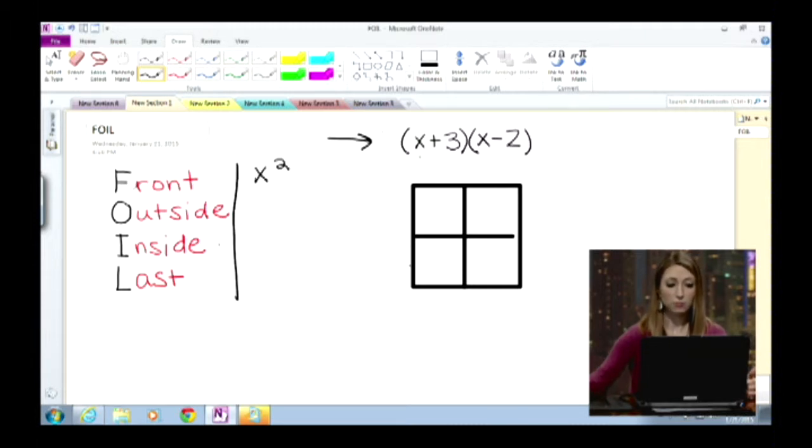Outside terms, so x and negative 2, which would give me negative 2x. Inside, the 3 and the x, this x. So that would give me 3x. And then last, so 3 and negative 2.